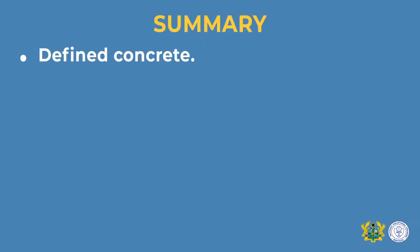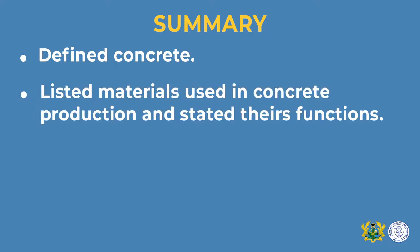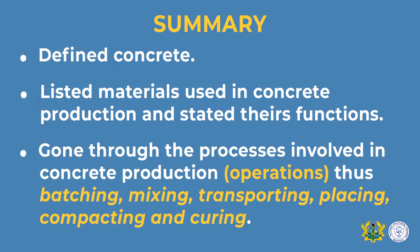So far, we have been able to define concrete, list all the materials required in concrete production and explain the functions of each. We have also gone through all the processes involved — batching, mixing, transporting, placing, and curing — including mixing by hand and by machine. In the next lesson, Mr. Samuel Amma will take you through how to calculate the quantities of materials for concrete production.